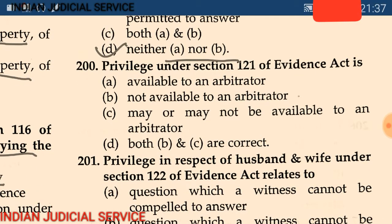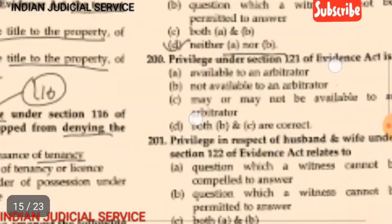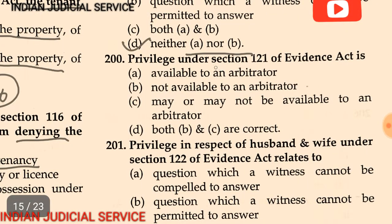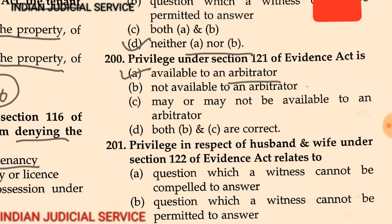Question 200 — the final question of this video. The privilege under section 121 of the Evidence Act is available to — (A) an arbitrator, (B) not available to an arbitrator, (C) may or may not be available to an arbitrator, (D) both B and C are correct. Section 121 provides privilege to a magistrate or judge, and it also extends privilege to an arbitrator.